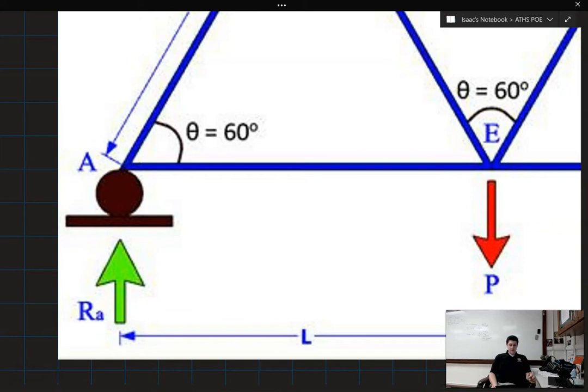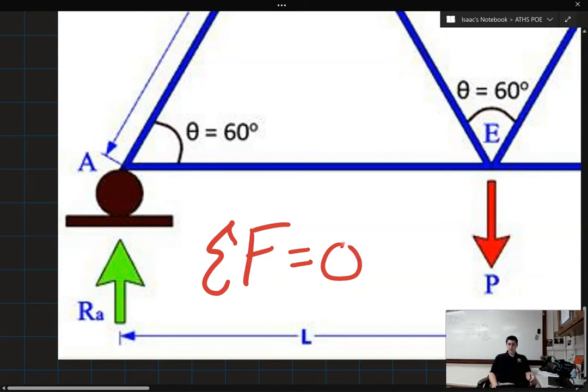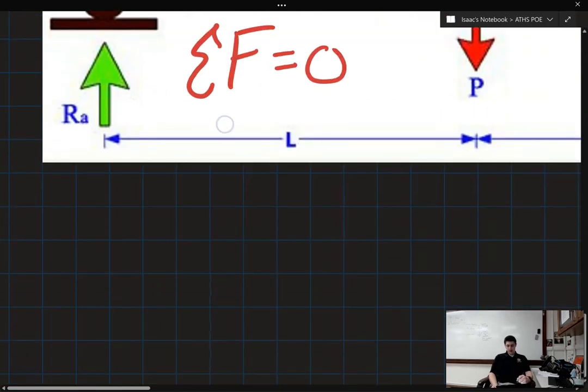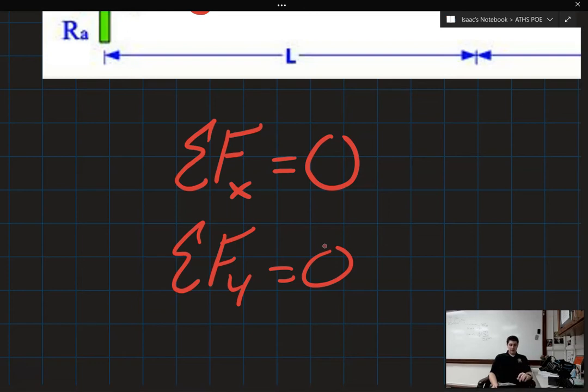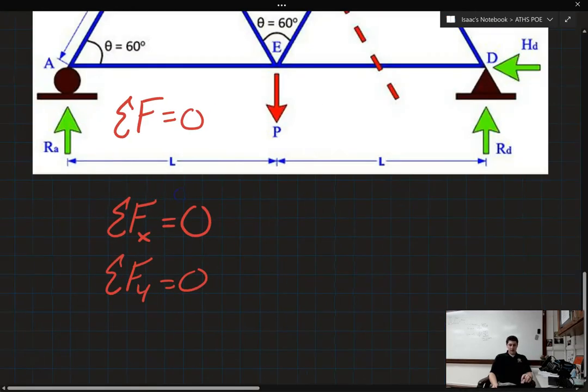So first things first, we need to remember that the net force that's acting on this thing is zero. But because this is a two dimensional shape, that means two things. It means that the net force in the x direction has to equal zero, and it means that the net force in the y direction has to equal zero. Remember that we can't directly add a horizontal force to a vertical force. So let's take a look at what that could look like for the free body diagram.